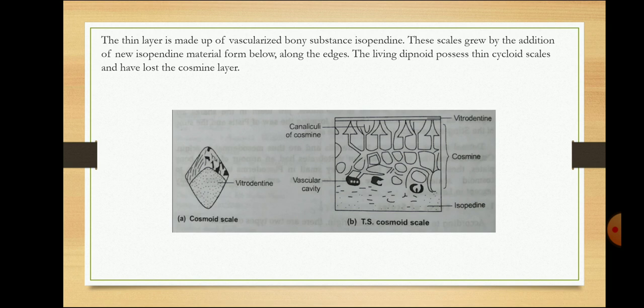These scales grow by addition of new isopedine material from below. Living dipnoid fishes possess this type of scale but have lost the cosmoid layer. The uppermost layer is vitrodentine, the middle portion is cosmoid, and the innermost part is isopedine.